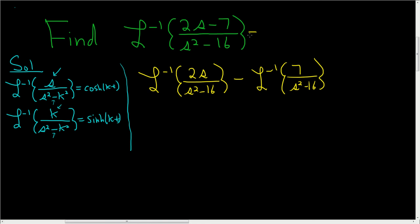The step I skipped was this one. Let me just sketch it in up here in case that's not clear. So it's 2s over s squared minus 16 minus 7 over s squared minus 16. And then you just take the Laplace transform of both pieces.